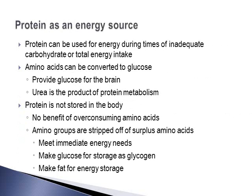Protein can be used for energy during times of inadequate carbohydrate intake or total energy intake. What's unique is that amino acids can actually be converted to glucose — fat cannot be converted to glucose, but amino acids can, though it's not an energy-efficient process. Since glucose is the preferred fuel for the brain, this conversion is important. When this happens, urea is a byproduct of protein metabolism; it's usually excreted, but a large buildup could have negative health implications.